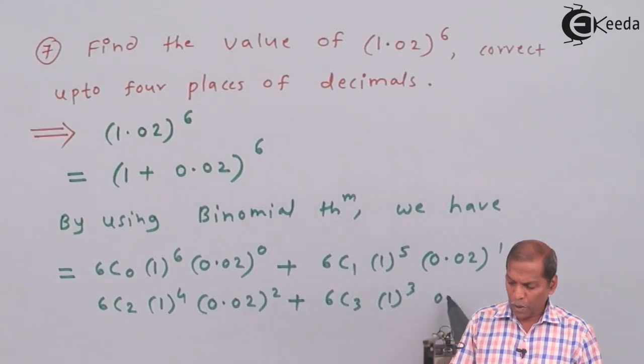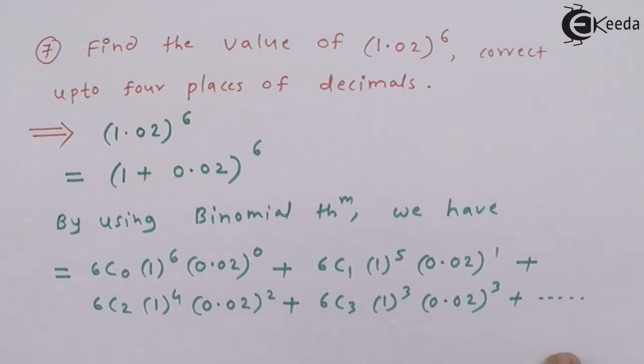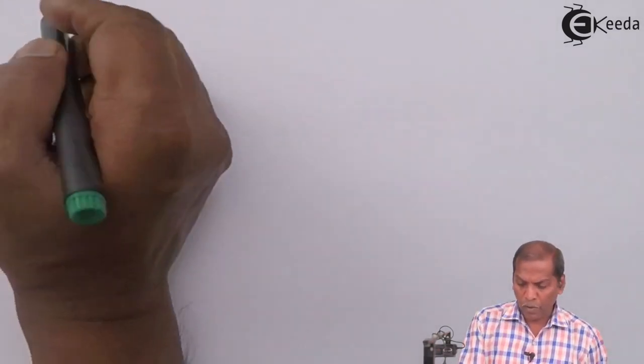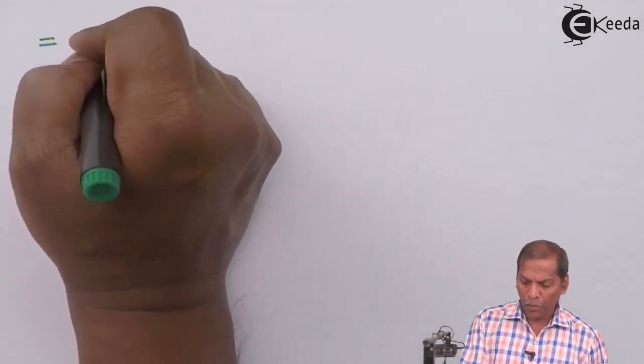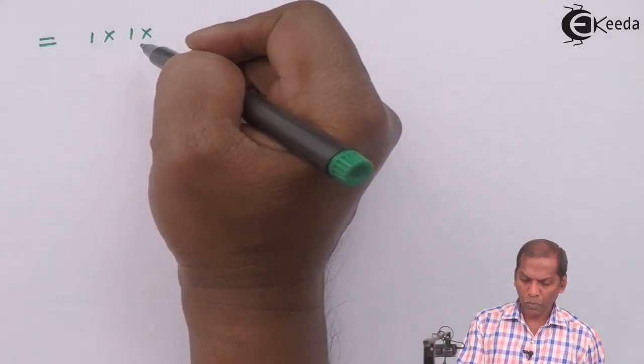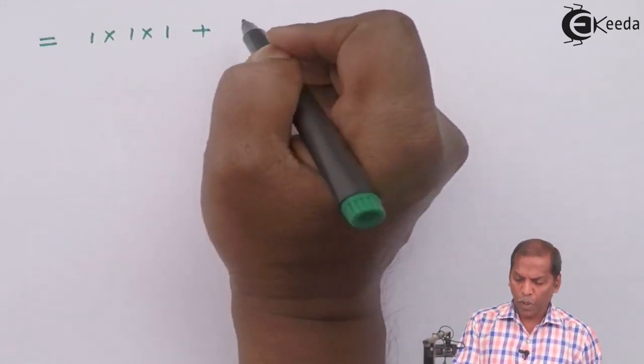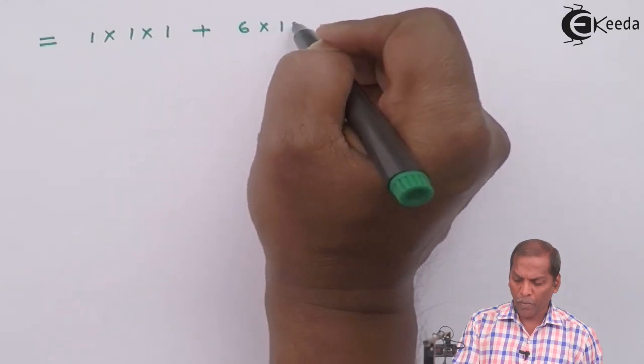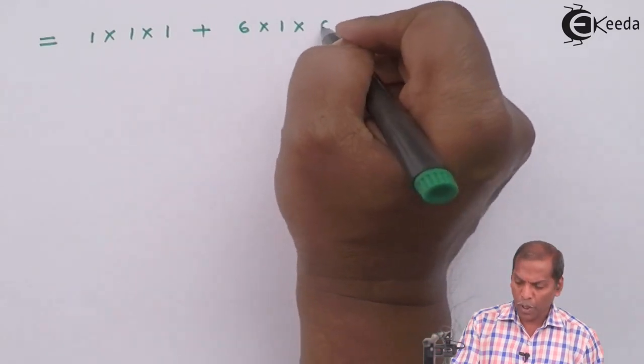On simplifying further we get equal to (6C0) gives 1 into (1)^6 gives 1 and (0.02)^0 gives 1, plus (6C1) that is 6, (1)^5 gives 1 and (0.02)^1 gives 0.02, plus